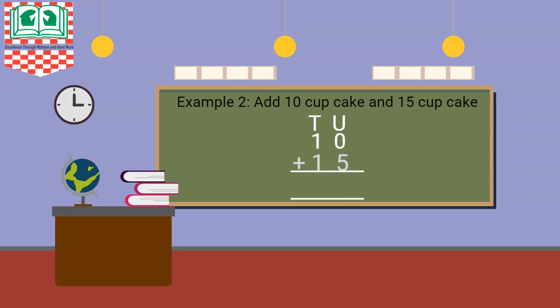Now remember, 0 means nothing, so you're going to count only 5 cupcakes. Let's count: 1, 2, 3, 4, 5. Write it back.